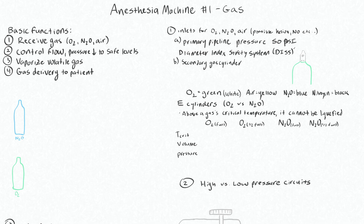These will be color coded as well, but this prevents you from hooking up a nitrous line to an oxygen port because the diameter physically will not fit. Then you have your backup and portable gas supply from gas cylinders, which are full of highly pressurized gases — the pressure here is very high because you're cramming all of this gas into a small cylinder.